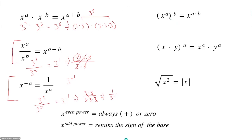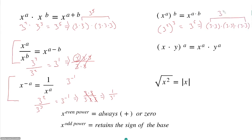When raising an exponent to an exponent, X to the A, all raised to the B, is equal to X raised to A times B. So 3 squared, all cubed, should be equal to 3 to the 6th. This makes logical sense because 3 squared is just 3 times 3, and if we have that 3 times, we're left with 6 threes.